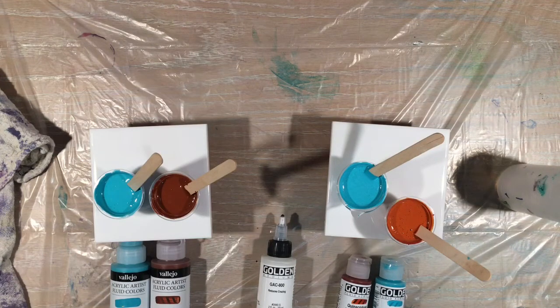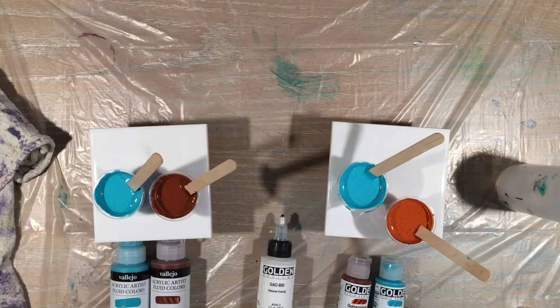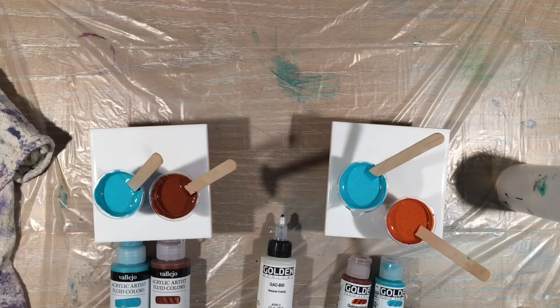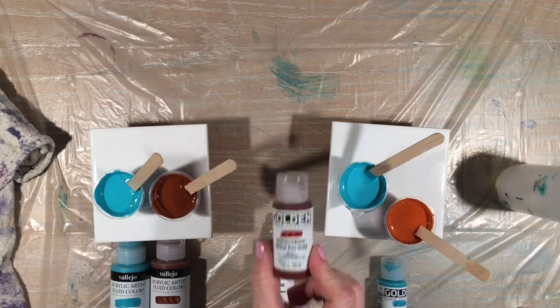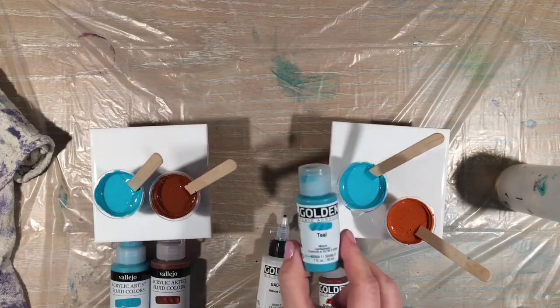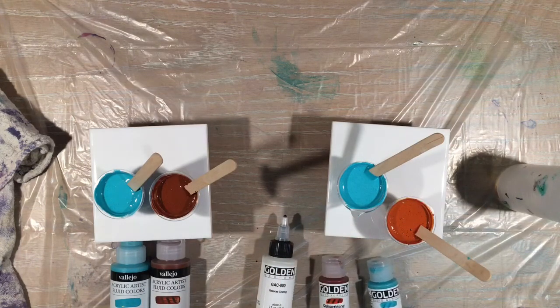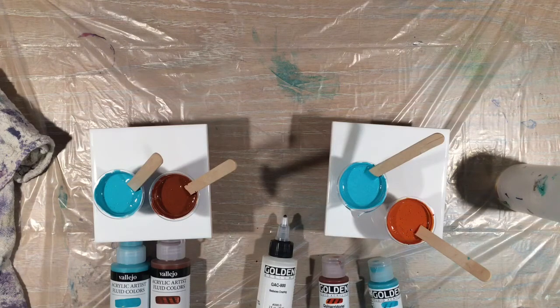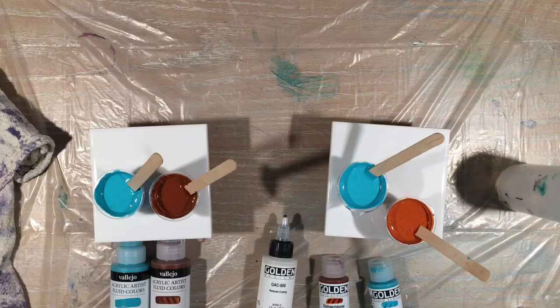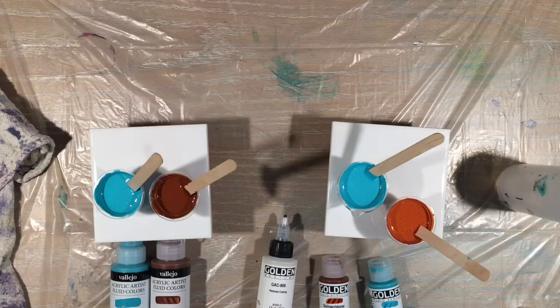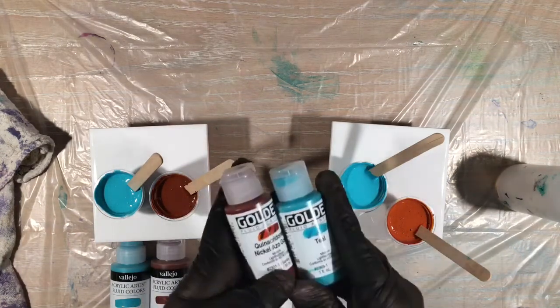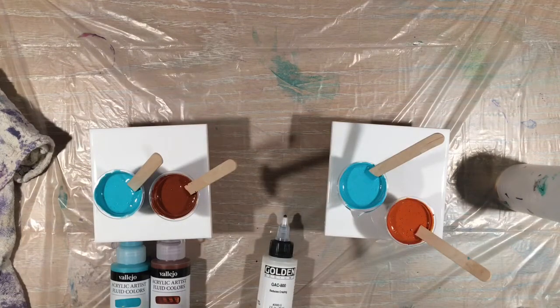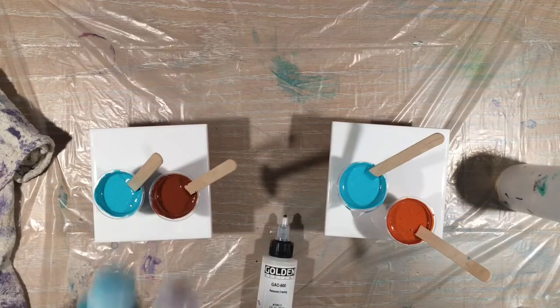Last week before last, I did a first impressions of golden fluid acrylics. And I used Quinacridone Nickel Azo Gold and Teal. So I noticed that it was kind of the same consistency of the Vallejo fluid acrylics. So I want to see if my mix that I used for the golden fluid acrylic tiles is going to be the same or going to work for my Vallejo.